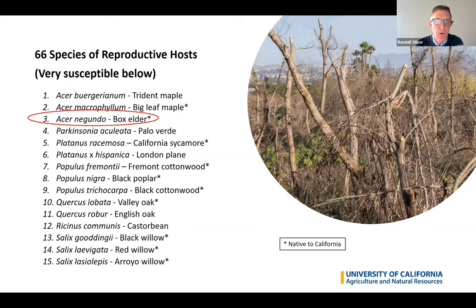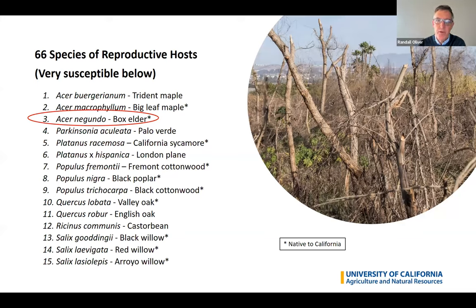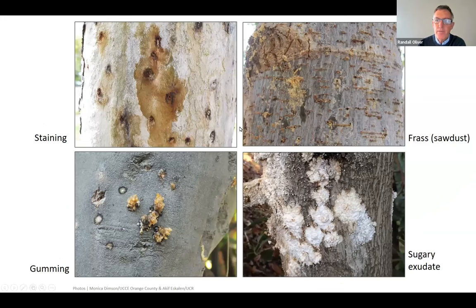The overall list of 66 is very diverse, but I should emphasize that neither it nor the list of 15 are do-not-plant lists. They should not be used in that way. Since the beetles are very small and spend most of their lives inside their tree hosts, they can be very difficult to spot.